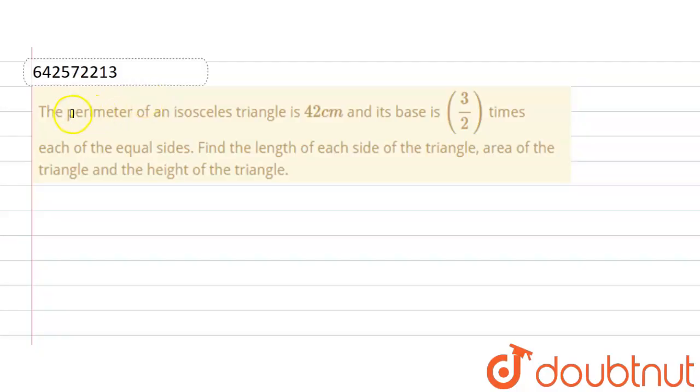Hello guys, the question is: the perimeter of an isosceles triangle is 42 cm and its base is 3 by 2 times each of the equal sides. You all know that isosceles triangle have two equal sides and two equal angles. Find the length of each side of the triangle, area of the triangle, and height of the triangle.